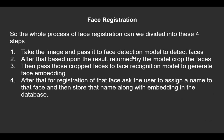The whole process of face registration can be divided into four steps. First, take the image and pass it to a face detection model to detect the face. Second, crop the detected faces. Third, pass those cropped faces to the face recognition model to generate face embeddings. Fourth, ask the user to assign a name, then store that name along with the embedding in the database. That is face registration inside a face recognition application.